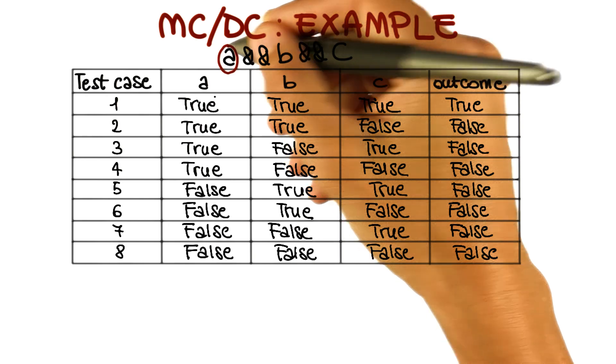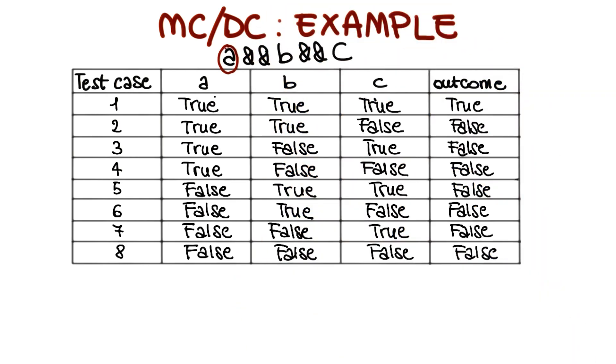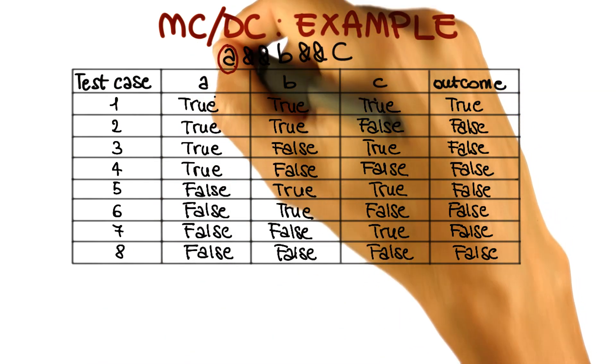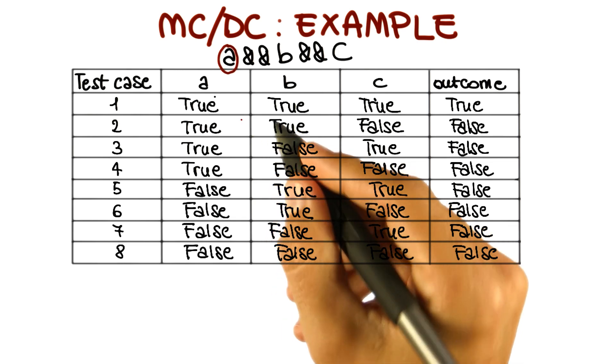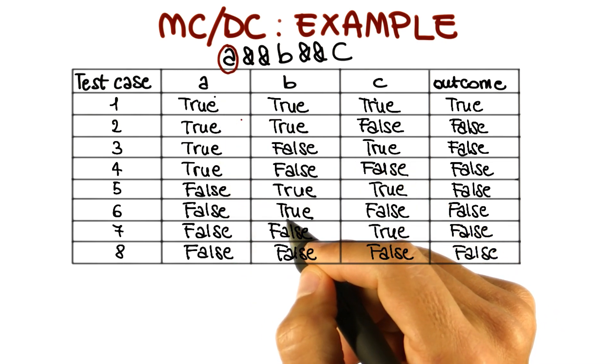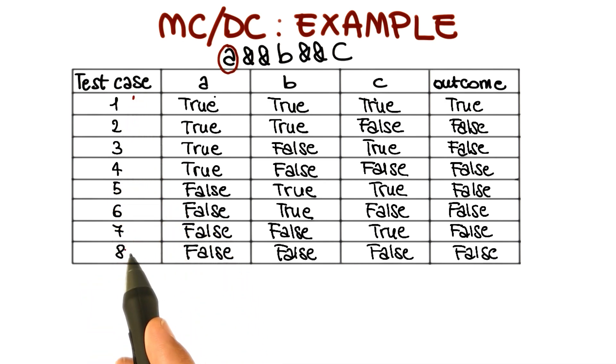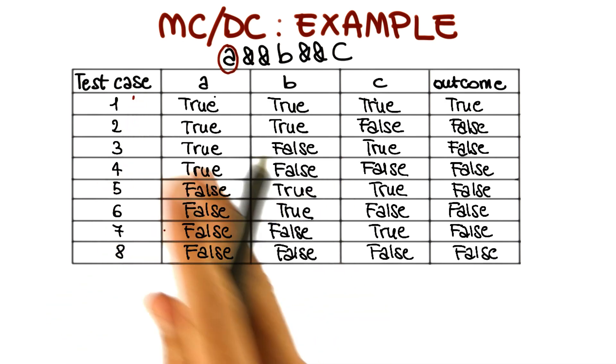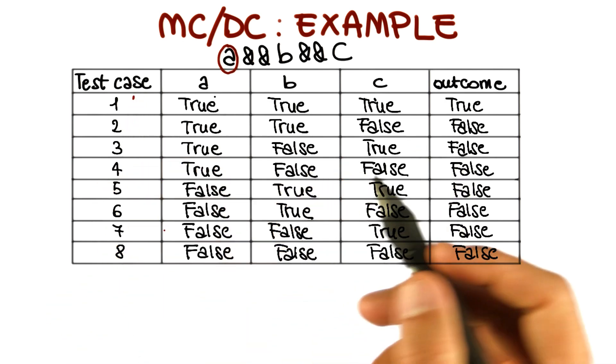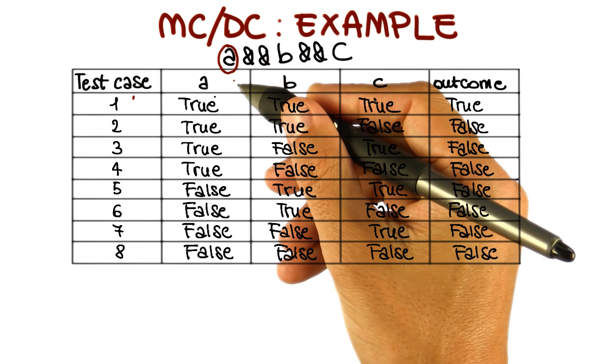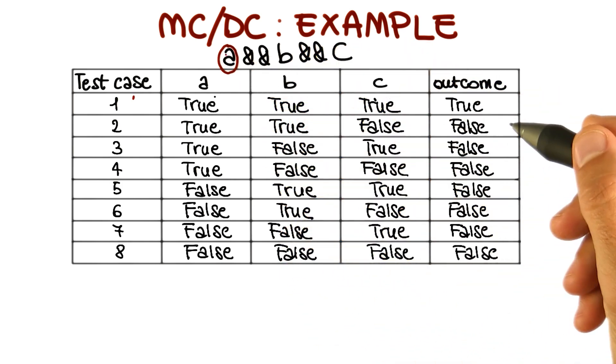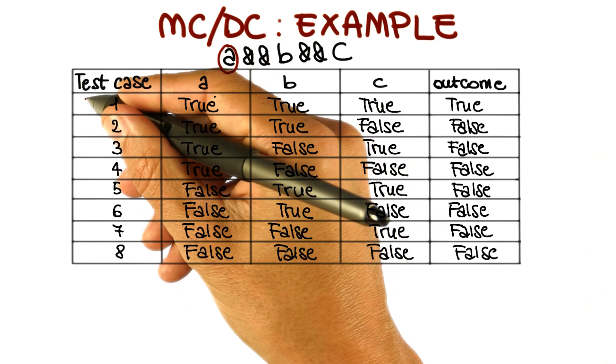Now let's consider the first condition A. As I said a minute ago, what we want to test are the important combinations, which are the combinations in which a single condition independently affects the outcome of the overall predicate. If we consider A and look at this possible set of test cases, let's try to find two test cases such that the only difference between the two test cases is the value of A, and the overall outcome of the predicate is different.